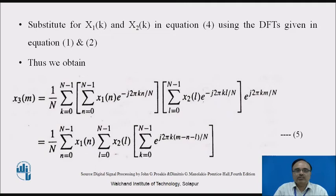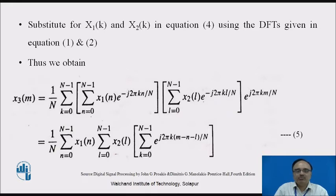X3(m) is calculated by rearranging the inner summation, expressing it in terms of x1(n) and taking the range for the new variable l — that is summation l=0 to N−1 — as x2(l). The exponential parameter has been considered with respect to the three variables defined in terms of m, n, l and the fundamental period N.